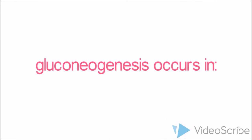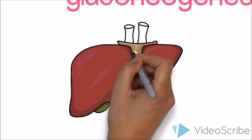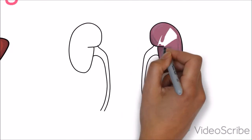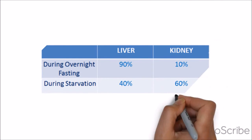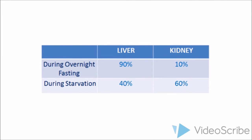Gluconeogenesis happens in the liver and in the kidneys, and these two organs work together. However, they do not contribute equally. During overnight fasting, the liver performs about 90% of gluconeogenesis while the kidneys do only 10%.